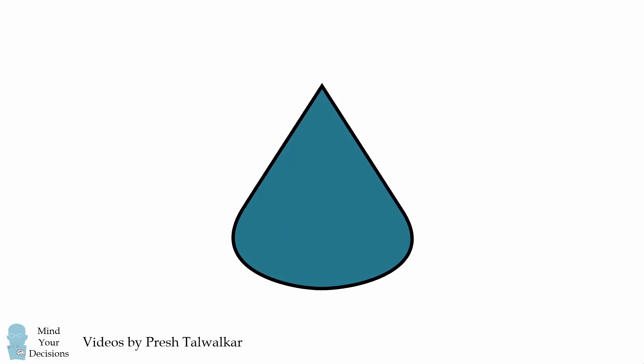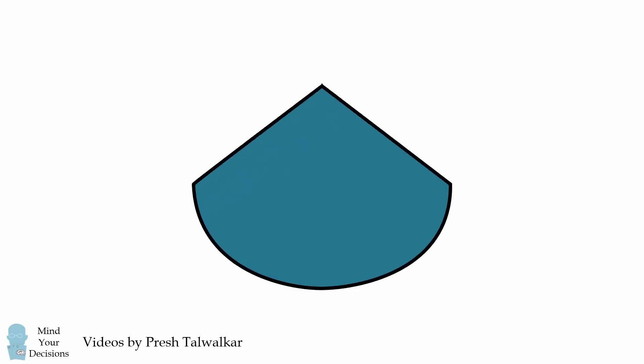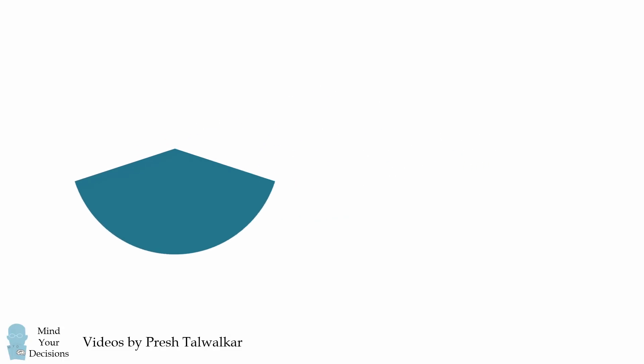A circular sector can be folded into the shape of a three-dimensional cone by joining its two radii together. The exact size of the cone will depend on the size of the circular sector. Let's unroll this cone back into a circular sector. Suppose that we have a fixed radius of this circular sector, and we just vary the central angle of this circular sector. What will happen to the cone?